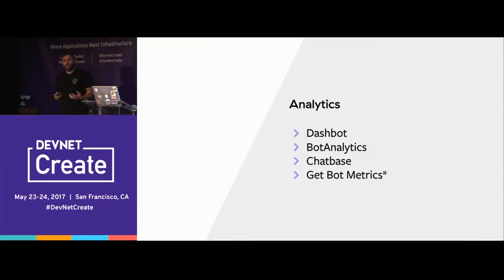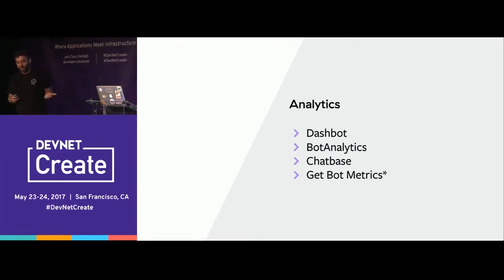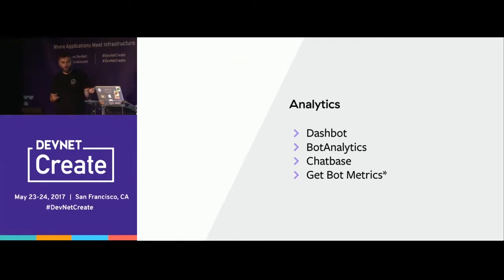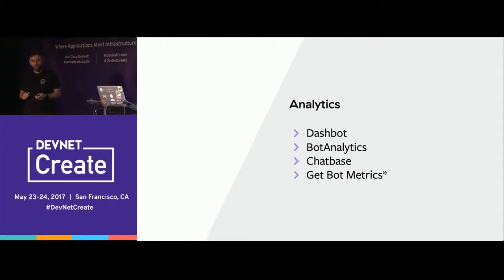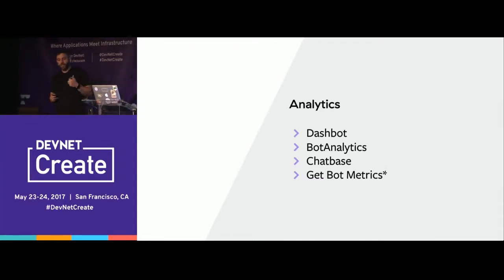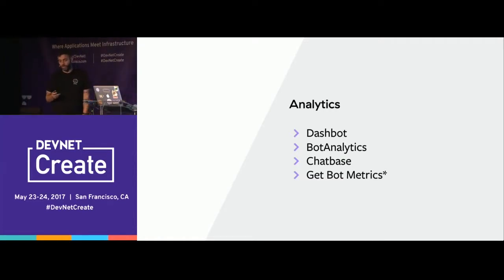Another thing you tend to need as your bot gets more complex and goes into production is analytics. There are great tools out there specifically for bot analytics: Dashbot is one, Bot Analytics is another, and Google just launched something called Chatbase — not even publicly available yet, but it's like Google Analytics for your bot. And there's GetBotMetrics, which is also open source and can be run in your own network. All of these offer retention analytics, messages sent, session length, and all sorts of data really useful for understanding how people are using your bot.